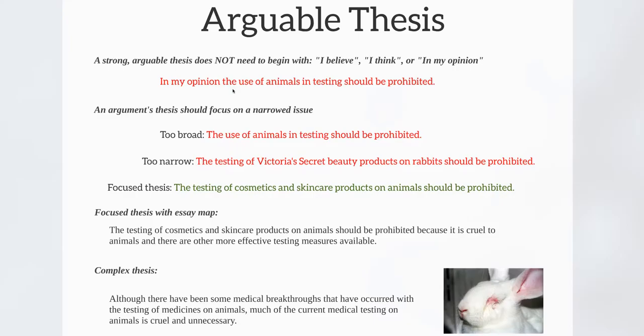For example, 'In my opinion, the use of animals in testing should be prohibited' — if you read that, you might think, well, that's just Vicki's opinion. But if you get rid of the first half and just say 'The use of animals in testing should be prohibited,' all of a sudden that sentence is a lot stronger and feels much more arguable, because it feels larger than just one person arguing her opinion. So when brainstorming your thesis, make sure you have a focus on a particular issue.